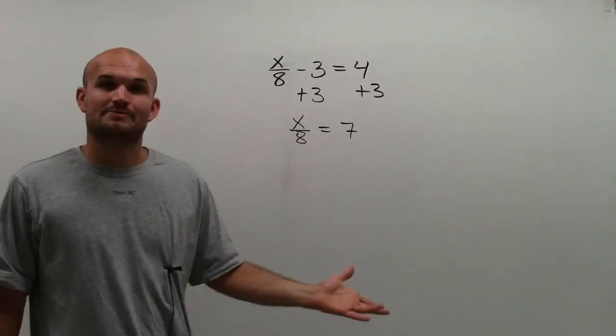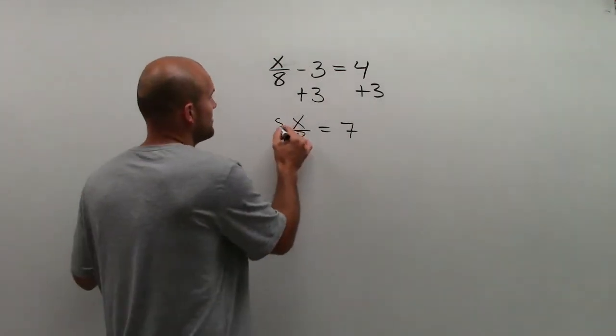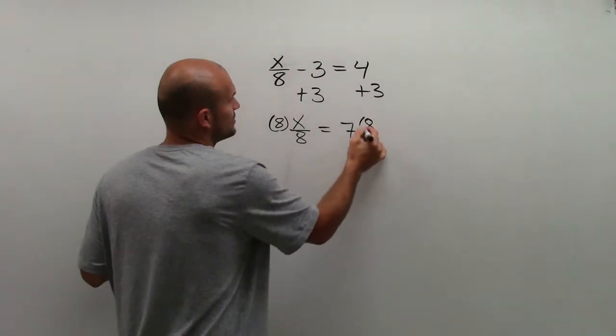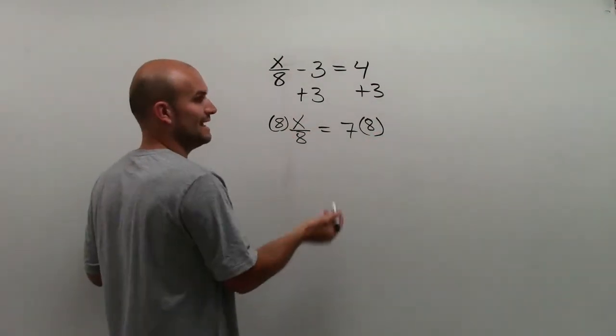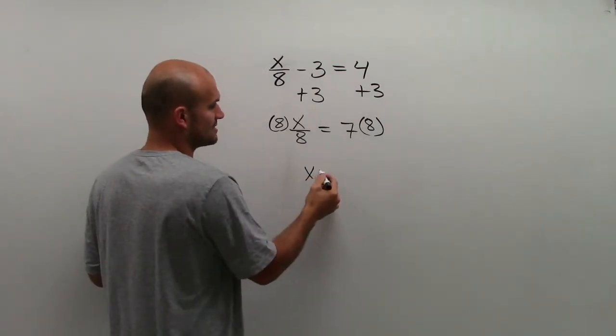Now I look at my variable and say, all right, it's being divided. So to undo division, I multiply by 8 on both sides by the multiplication property of equality. 8 divided by 8 is 1. 1 times x is just x.